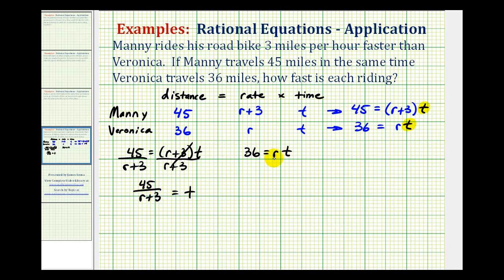If we solve this equation for t, we would divide both sides by r. This simplifies to one, so we have t equals 36 divided by r.